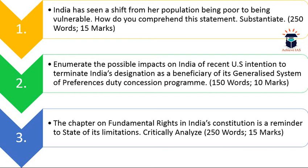The second question is: Enumerate the possible impacts on India of the recent US intention to terminate India's designation as a beneficiary of its Generalized System of Preferences duty concession program. Recently, US President Donald Trump announced that the US administration would terminate India's designation under GSP, in which certain duty concessions are given to Indian exports to the US. You have to enumerate the possible impact on India. The word limit is 150 and the maximum marks are 10.